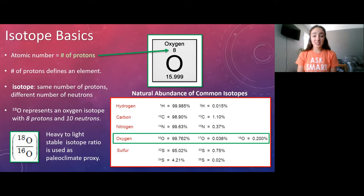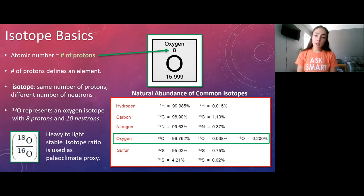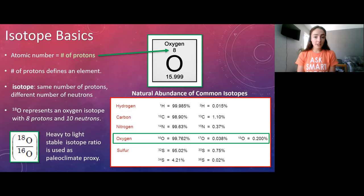We don't study oxygen-17 in stable isotope geochemistry because there's so little of it in the natural environment that it's very hard to detect. In stable isotope geochemistry, we always take the ratio of heavy to light isotope — never light over heavy, always heavy over light.